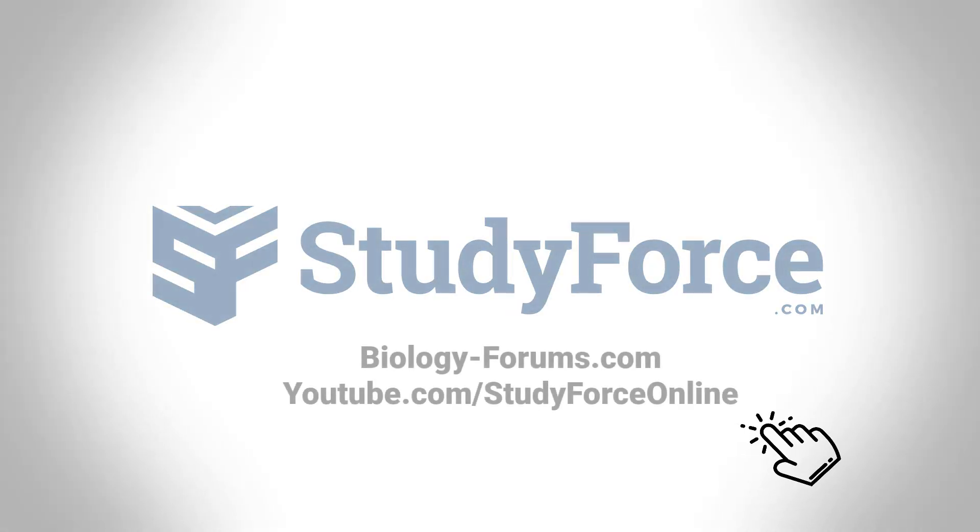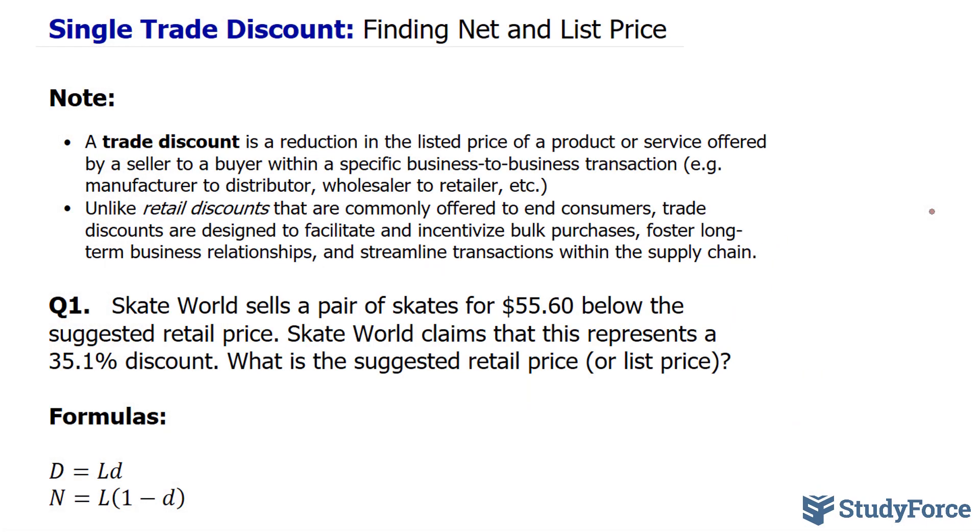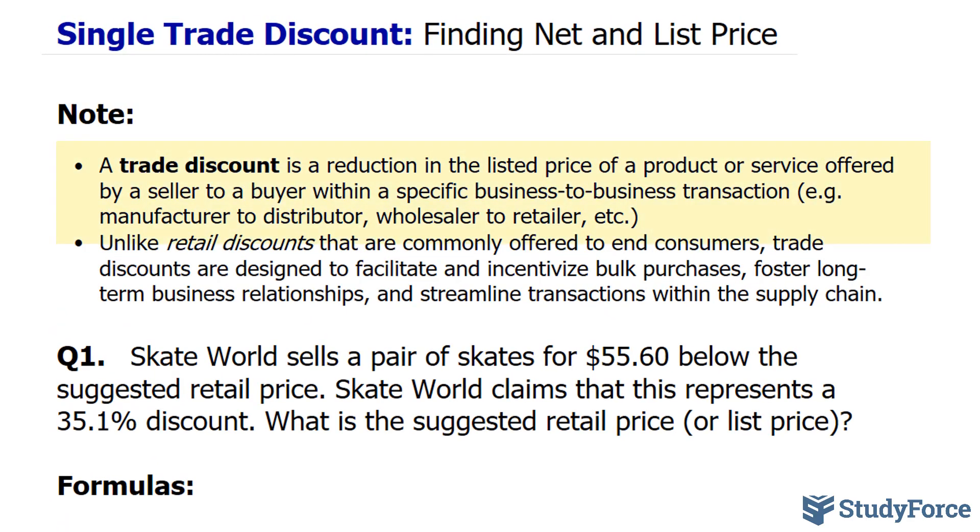In this lesson, we'll look at single trade discount examples where we have to find the net and list price. Let's quickly review what a trade discount is. A trade discount is a reduction in the listed price of a product or service offered by a seller to a buyer within a specific business-to-business transaction.